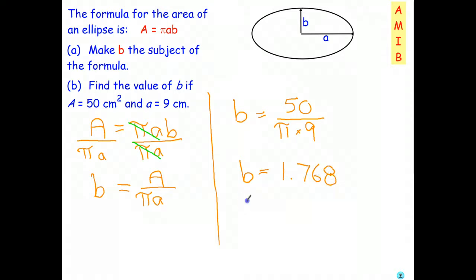And if I round it off to two decimal places, because there's an 8 in the thousandths place, that means that goes up to a 7. And I get 1.77. And the units are centimeters. So basically, rewrite the formula, substitute, and evaluate.